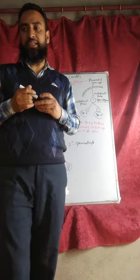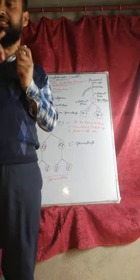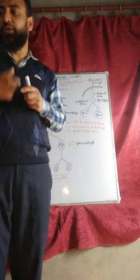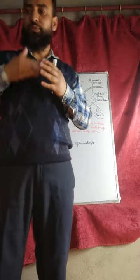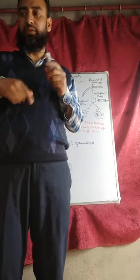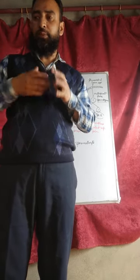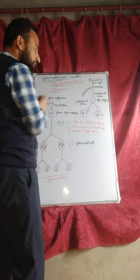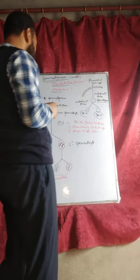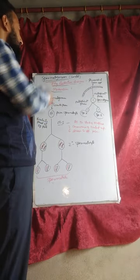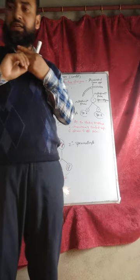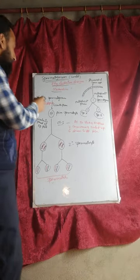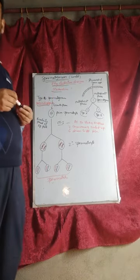Type A spermatogonia acts as a stem cell. It proliferates and undergoes repeated mitotic divisions to produce more and more daughter cells — more and more type A spermatogonia. Some of the spermatogonia, known as type B spermatogonia, enter the growth phase. Spermatocytogenesis — what is spermatocytogenesis?